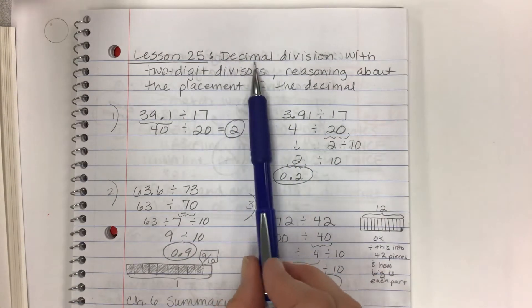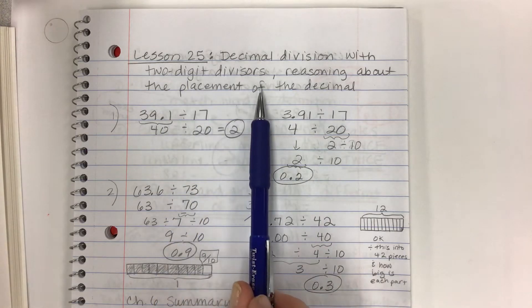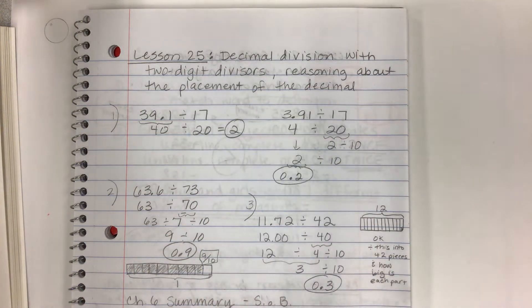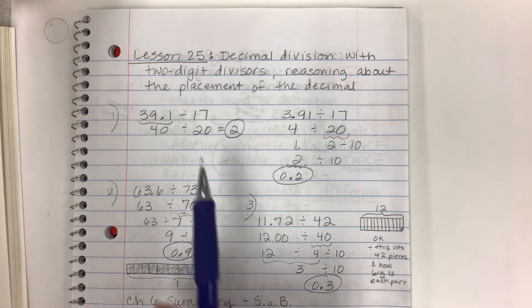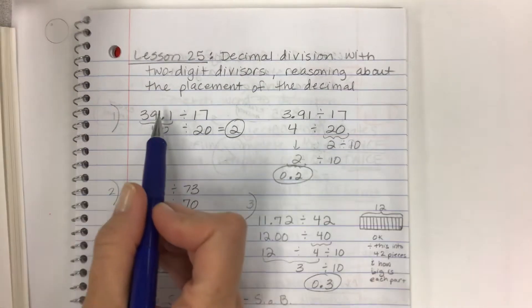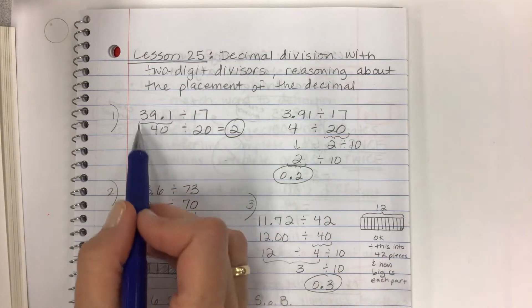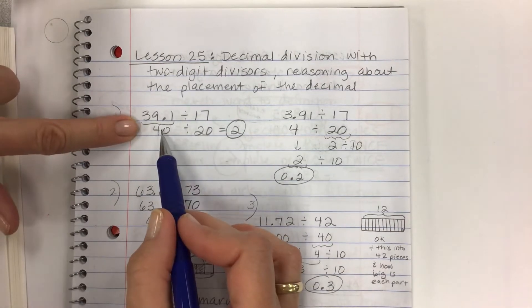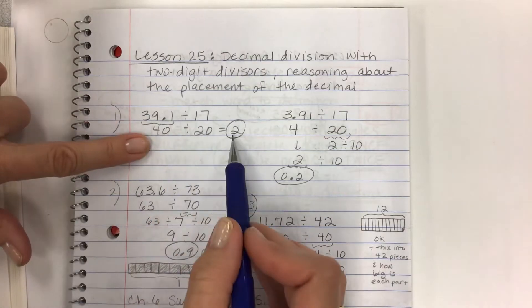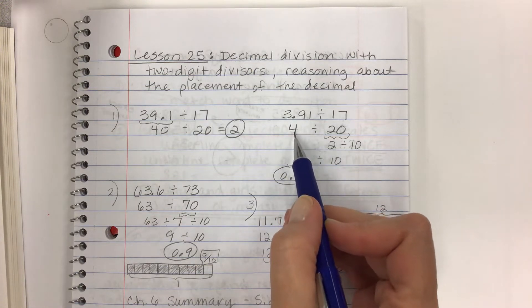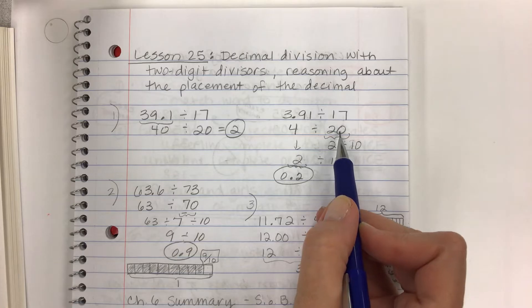So objective today: decimal division with two-digit divisors. But the most important part is reasoning about the placement of the decimal. So we're really just thinking a lot today, thinking about the size of the numbers, the numbers as they relate to each other. Dividends that are less than the divisor.